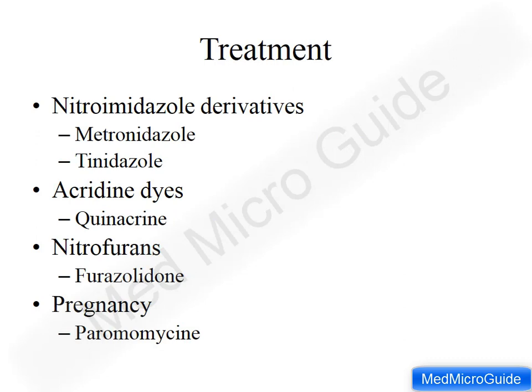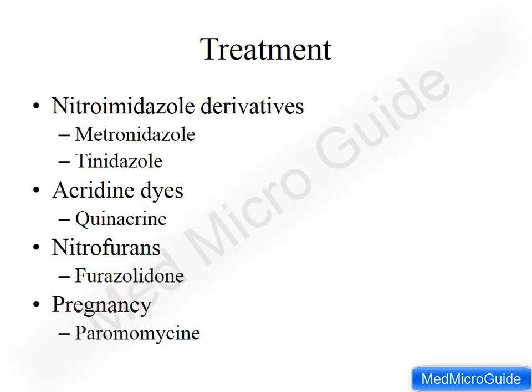Treatment includes nitroimidazole derivatives like metronidazole or tinidazole. Quinacrine, an acridine dye, or furazolidone, a nitrofuran, can also be used. All these drugs are used in non-pregnant patients, whereas in pregnancy, paromomycin is used. Though paromomycin is less effective against Giardia, it is preferred in pregnancy due to its safety profile. Preventive aspects include hand hygiene, boiling water before use, drinking filtered water, chlorination of water, improved water supply, proper disposal of human feces, and health education.